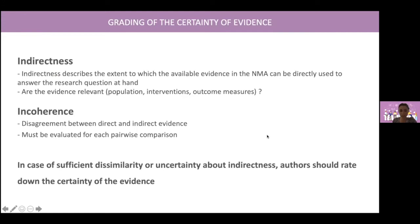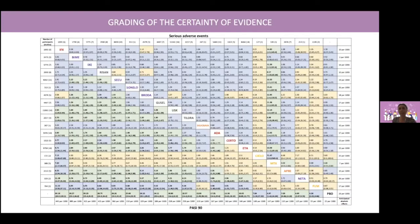In case of sufficient dissimilarity or uncertainty about indirectness, authors should rate down the certainty of evidence. This table sums up all the results of the network meta-analysis for psoriasis. You have all the interventions listed, the two main outcomes in the lower triangle — the efficacy outcome with PASI 90 — and in the upper triangle, serious adverse events, with results for all two-by-two comparisons.